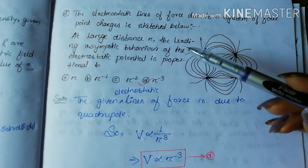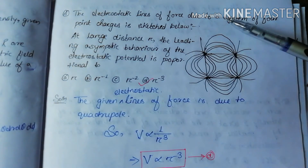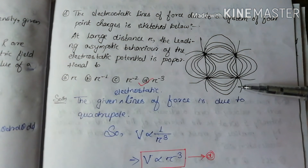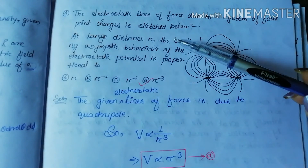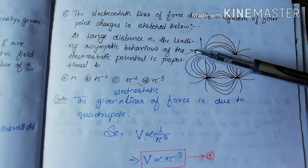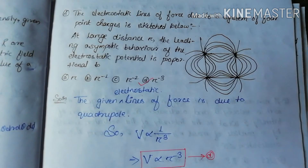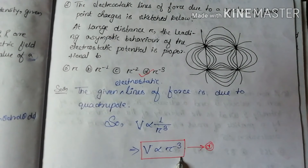The next question shows electrostatic lines of force due to a system of four point charges. We have to determine the leading asymptotic behavior of the electrostatic potential at large distances. Since the field lines are due to a quadrupole, we know the electrostatic potential V is proportional to 1/r³, i.e., V ∝ r^(−3). The correct option is option D. For more details, check the multipole expansion video linked in the description.